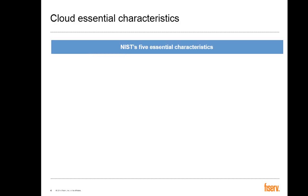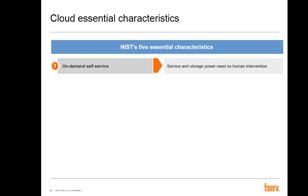Looking at the NIST five essential characteristics, they define it as a cloud should provide an on-demand service. Cloud is about the on-demand service — a service and storage power that needs no human intervention.